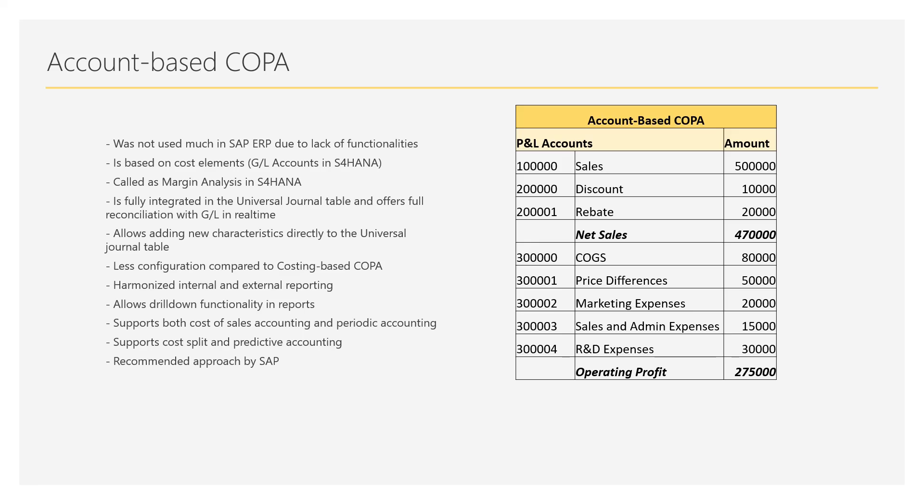Because it is directly linked to the universal journal table with real-time GL reconciliation, the advantage is that in costing-based COPA a new characteristic is stored in a separate table, not in the GL tables. But in account-based COPA you can add a new characteristic directly in the ACDOCA table — the universal journal table — meaning every characteristic and its values are present in a single table.